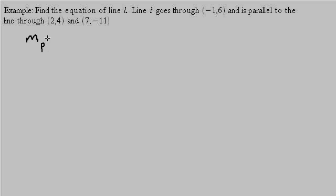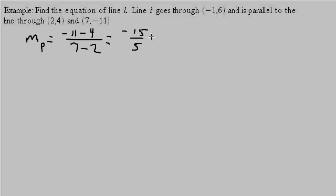So the slope of the parallel line — subscript P — equals y2 minus y1 over x2 minus x1, which is negative 15 over 5, which equals negative 3. So the slope of line L is equal to negative 3 since it's parallel — they have the same slope.